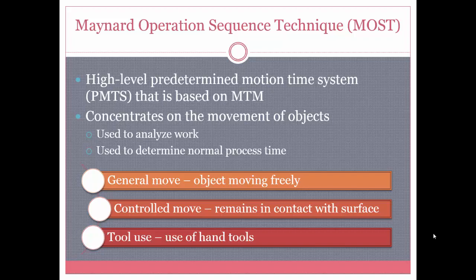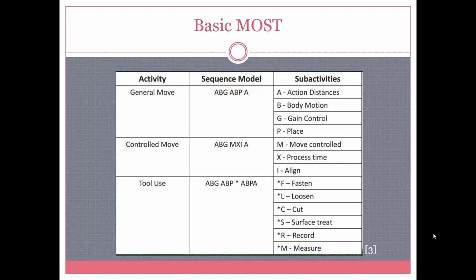MOST is based on MTM, but it concentrates on the movement of objects and deals with the sequence. There are three main aspects: the general move, where an object moves freely such as a book being picked up off the ground; a controlled move, where the object remains in contact with a surface such as a cup sliding across a desk; and tool use, which involves the use of hands. This graph shows Basic MOST and each of the activities just described. To illustrate, using general movement as an example, the sequence model is ABG–ABP–A.